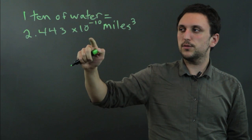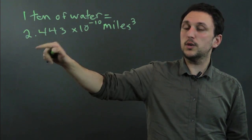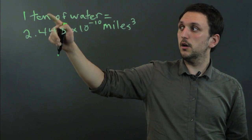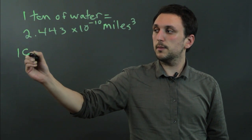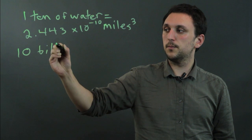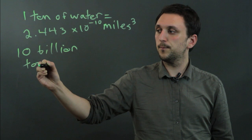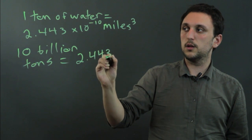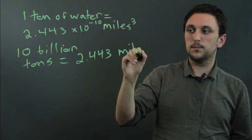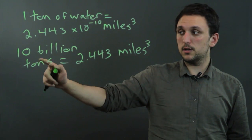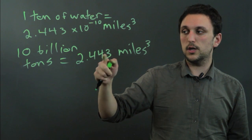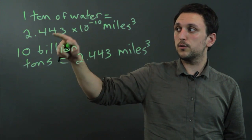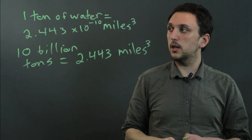So that is roughly two ten-billionths of a cubic mile for one ton of water. To think about it the other way, ten billion tons equals 2.443 miles cubed. So if we have ten billion tons of water, that gives us roughly two and a half cubic miles. But if we have one ton of water, that's almost two ten-billionths of a cubic mile of water.